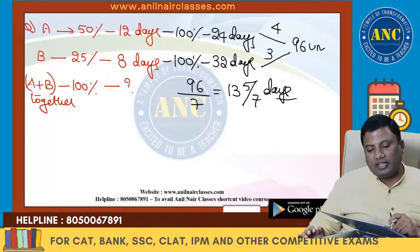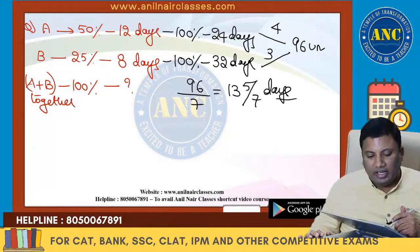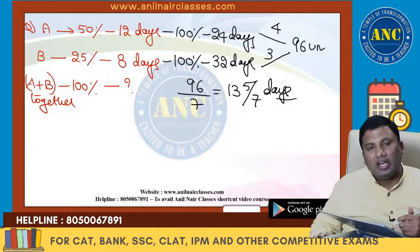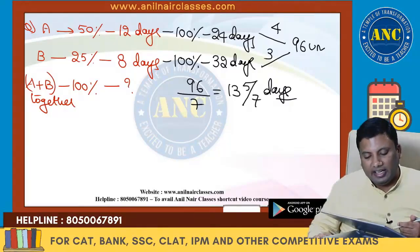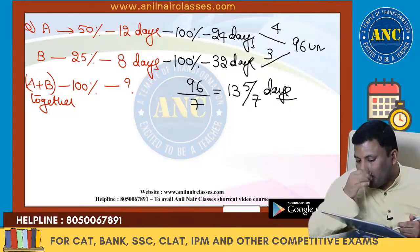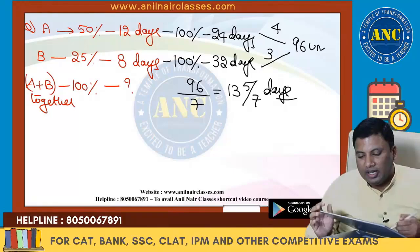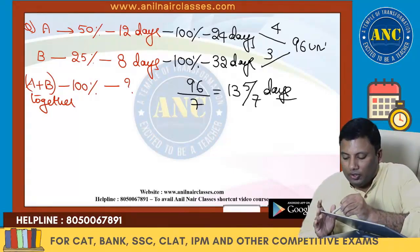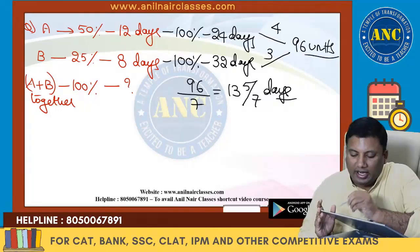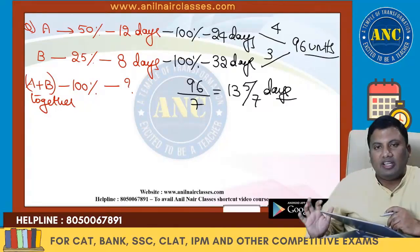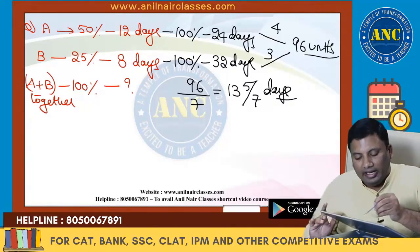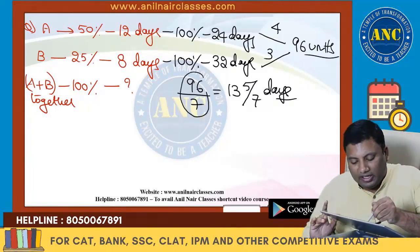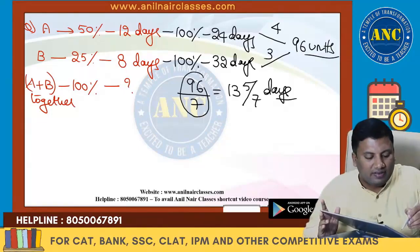To summarize: A does 50% in 12 days → 100% in 24 days. B does 25% in 8 days → 100% in 32 days. LCM of 24 and 32 is 96 units. A does 4 units/day, B does 3 units/day. Together: 96 by 7 days.